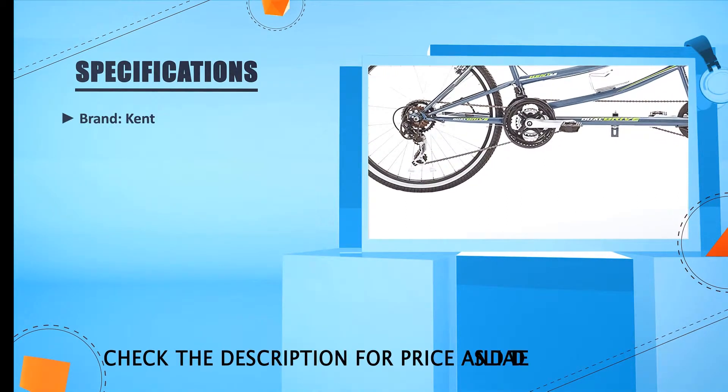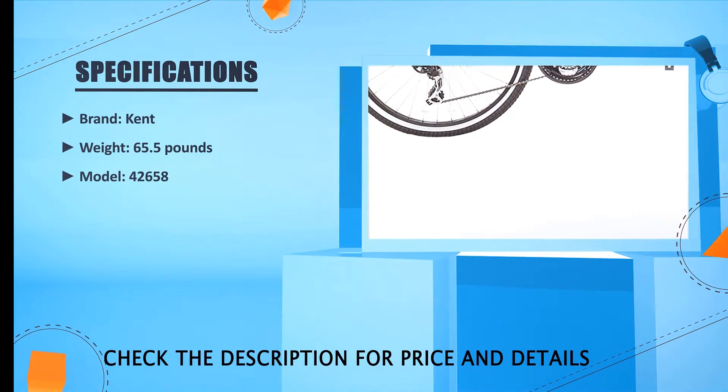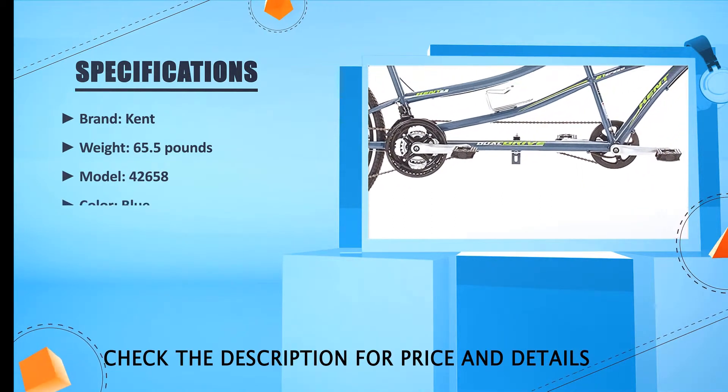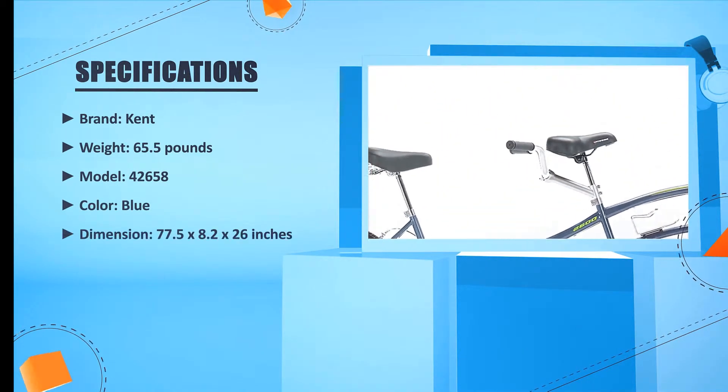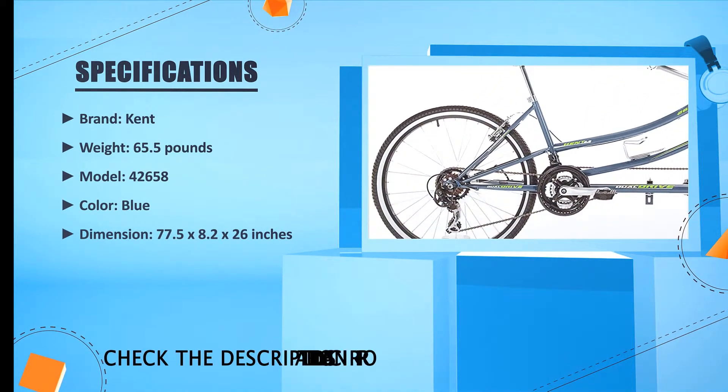Brand: Kent, Weight: 65.5 pounds, Model: 42658, Color: Blue, Dimension: 77.5 x 28.2 x 26 inches.